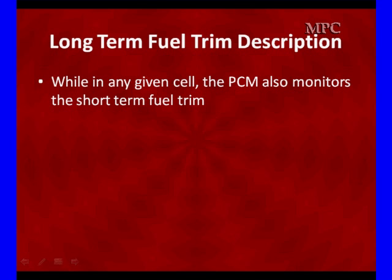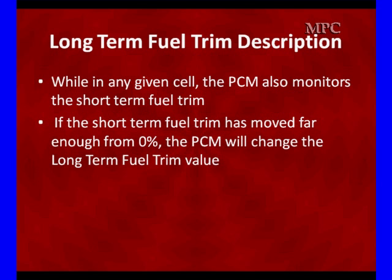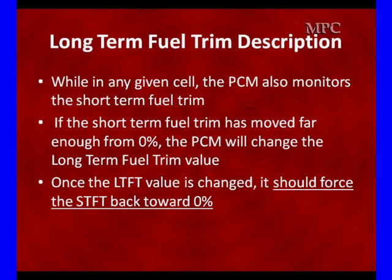Long-term in any given cell is when the PCM monitors short-term fuel trims and makes adjustments. When short-term has moved too far from 0, the PCM will change long-term. Once long-term values change, it should force short-term back to 0. If it can't force it back to 0, we're out of fuel control. Both short-term and long-term being higher than normal, with short-term not getting back to 0, sets our trouble code. We won't set a trouble code until short-term has gone as far as long-term can go.